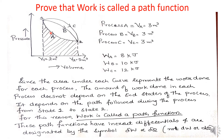Since the area under each curve represents the work done, the area under curve A represents the work done during process A, the area under curve B represents the work done during process B, and the area under curve C represents the work done during process C. The work done during process A is 8 kilojoules, during process B is 10 kilojoules, and during process C is 12 kilojoules. The area under each curve is different — they are not the same.